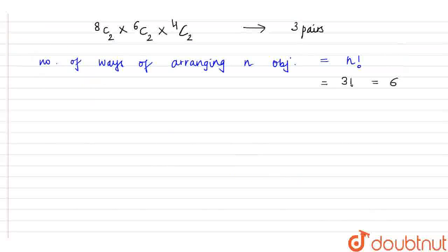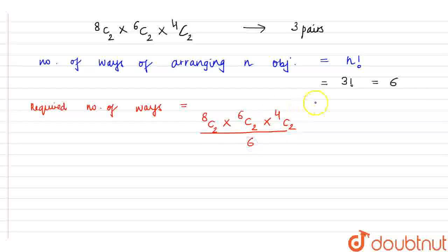So hence from here, we can say that our required number of ways becomes equals to 8C2 into 6C2 into 4C2 whole upon 6 because these pairs will be similar. So this will be divided by 6.